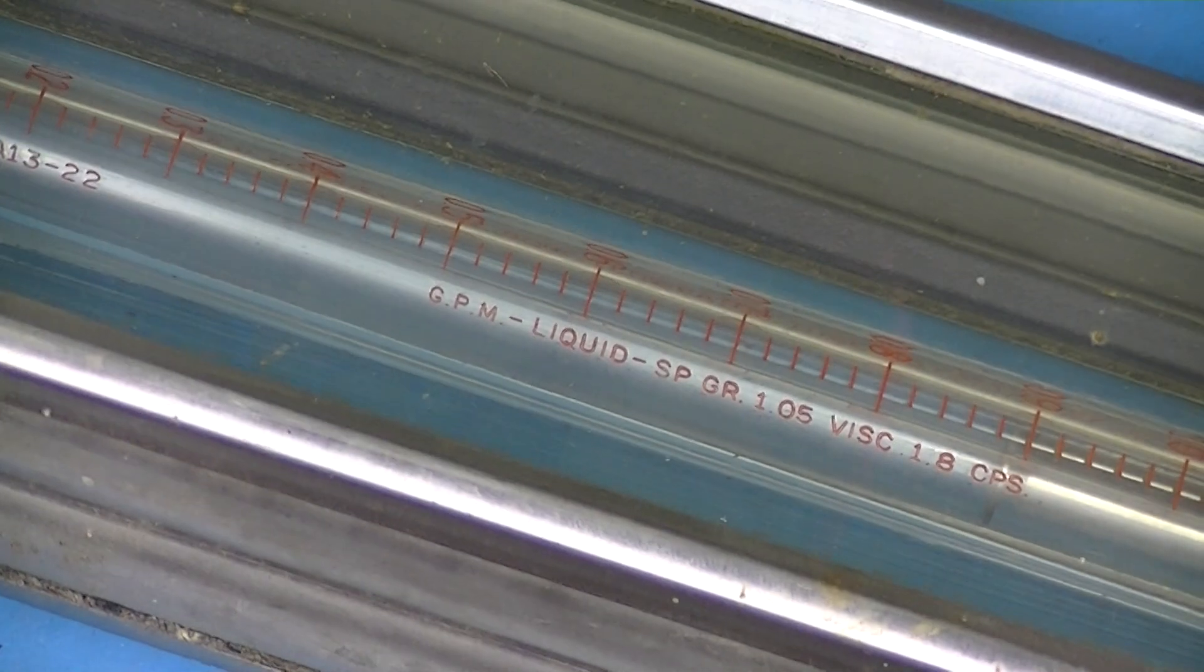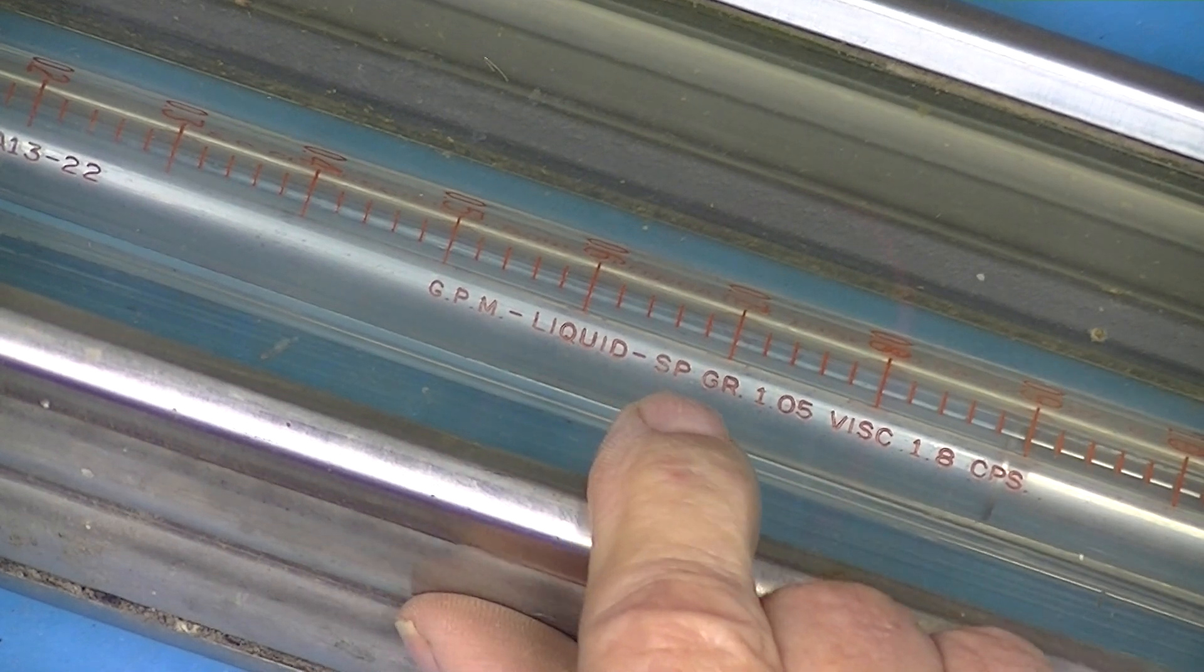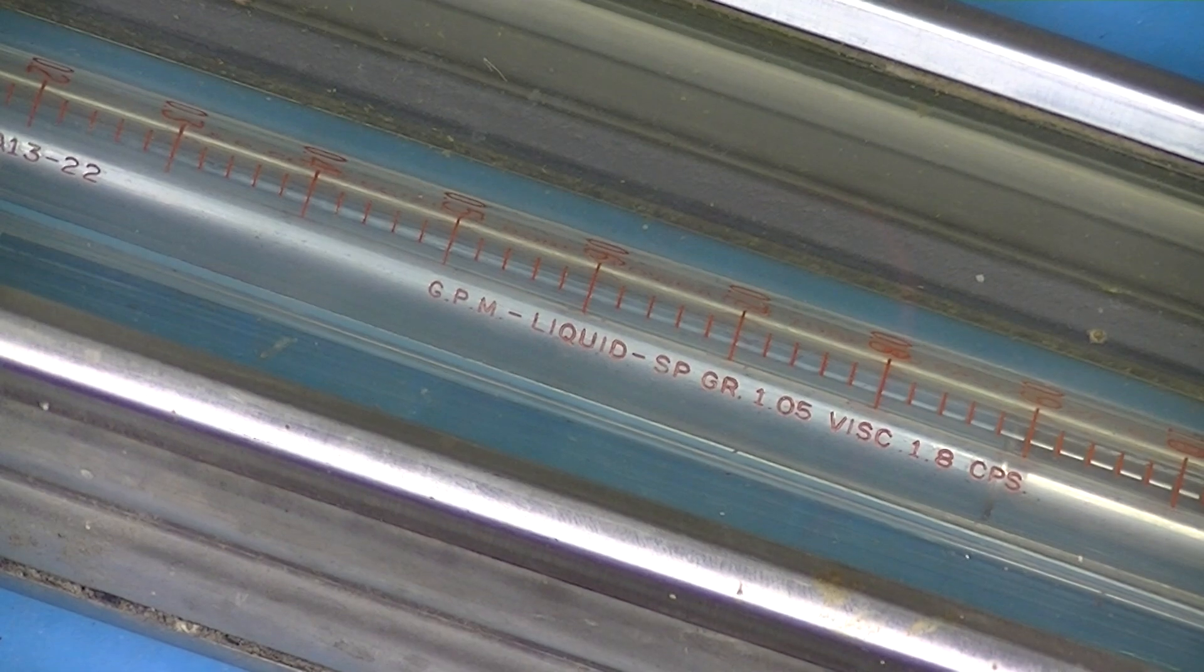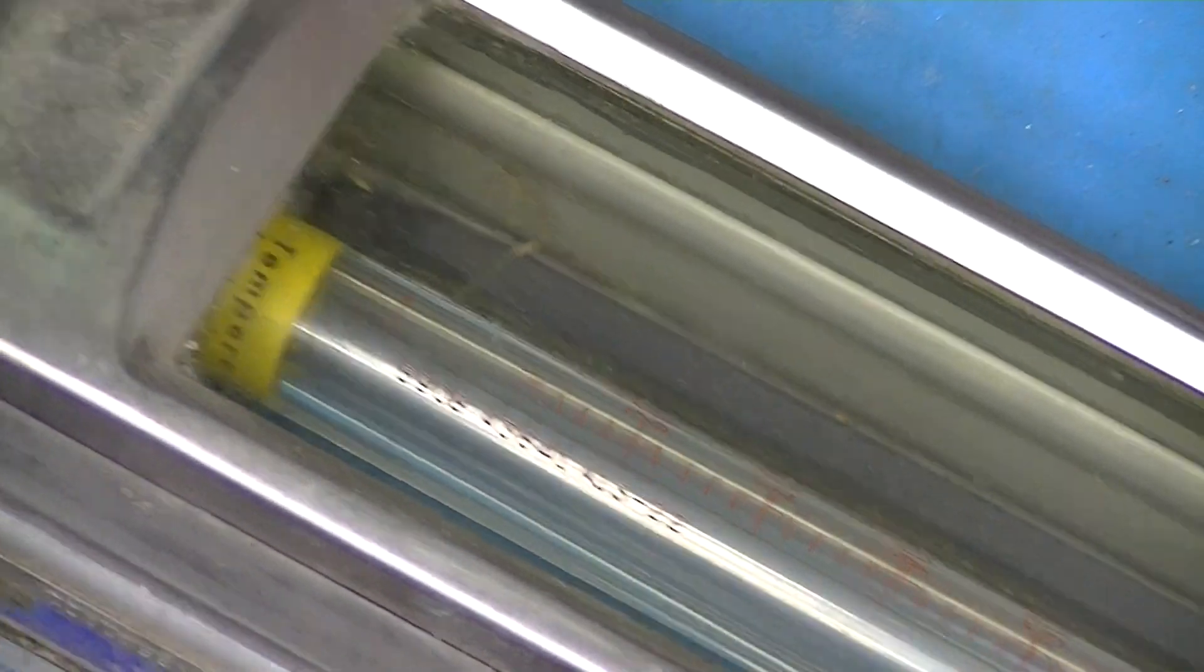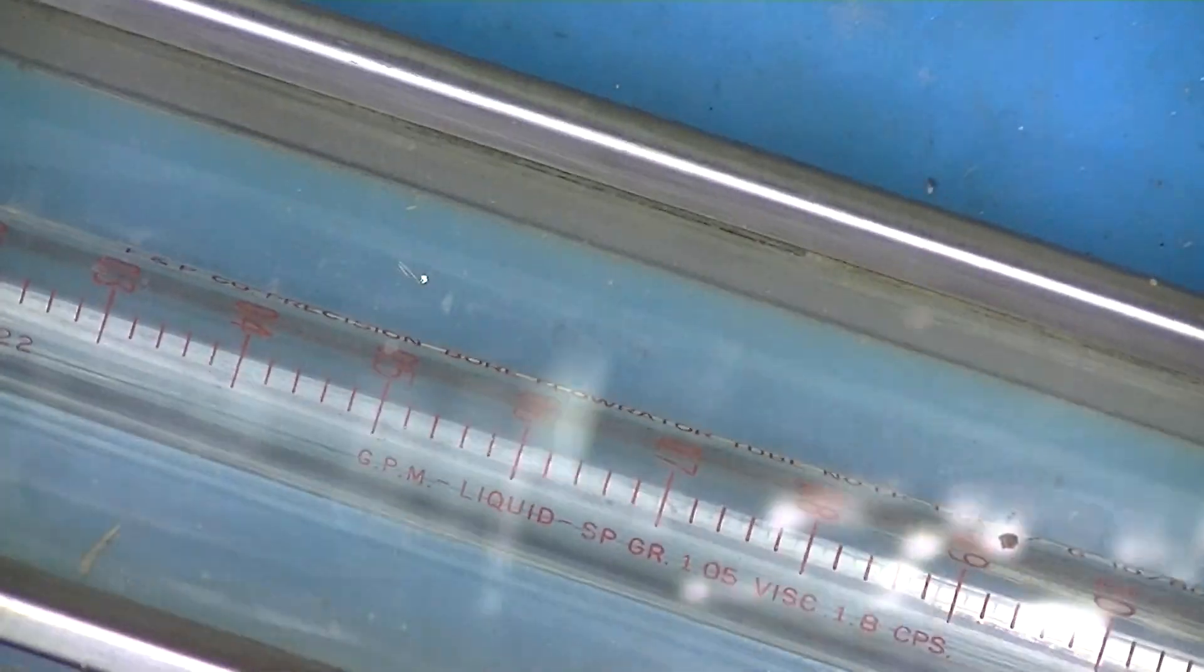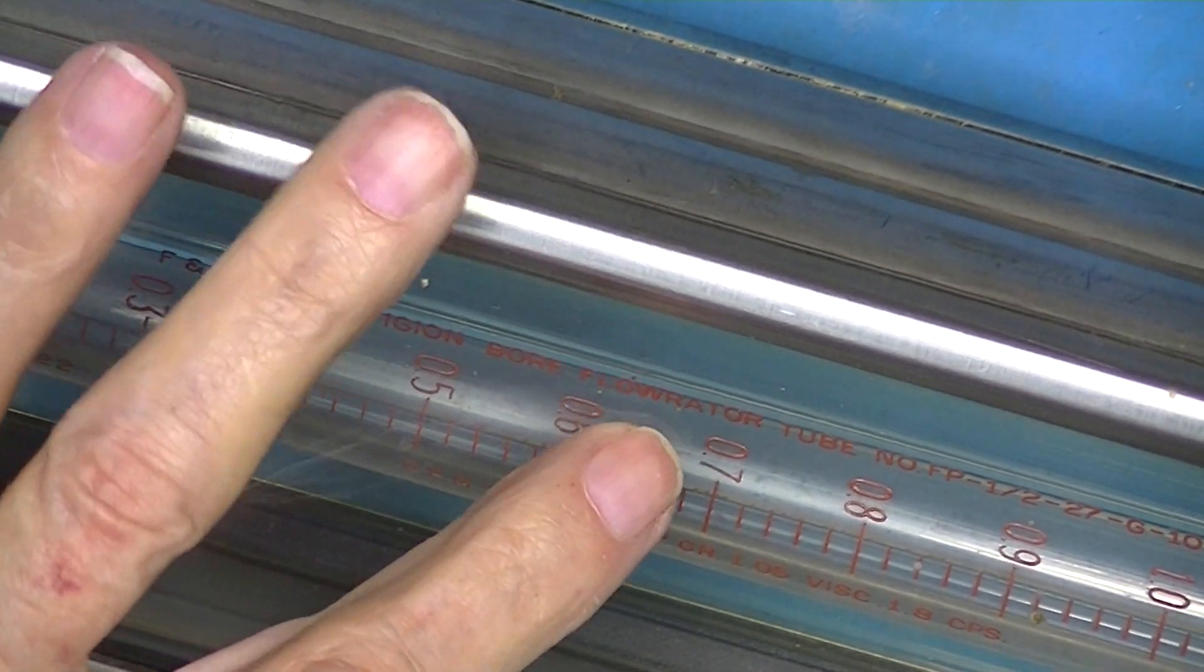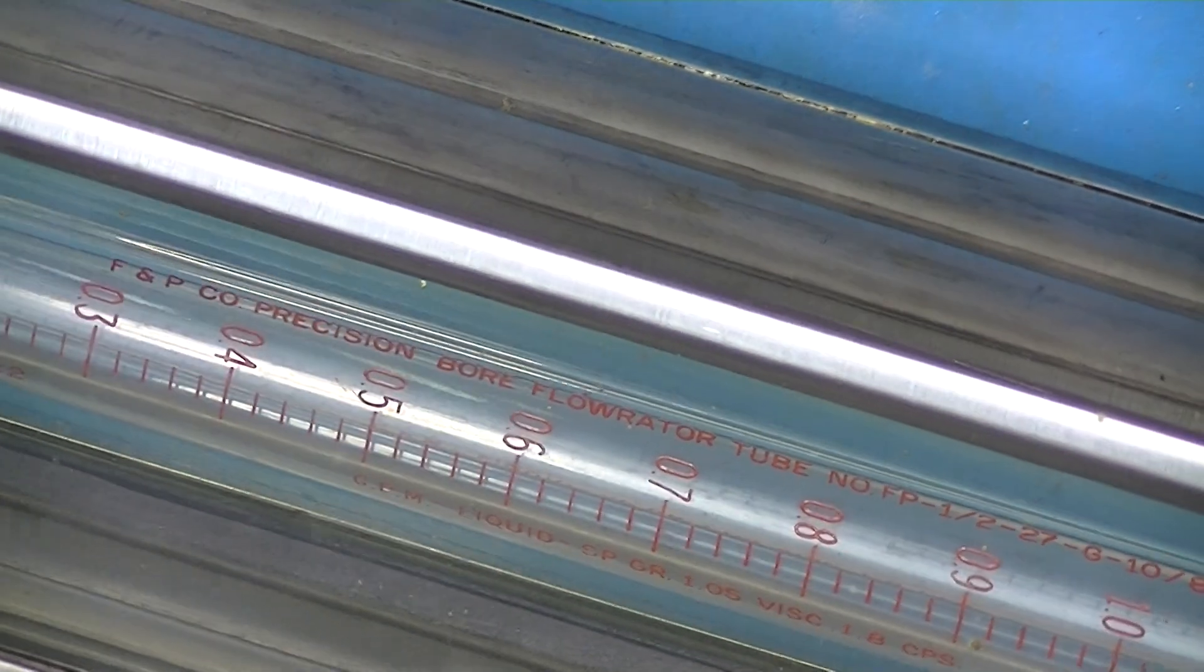It's calibrated in gallons per minute of a liquid with specific gravity of 1.05 and viscosity of 1.8 centipoise. So it's a very specific set of measuring conditions. Again, the tube is serialized. We have half inch end connections and it's marked Fisher and Porter Company Precision Bore Flow Rater. Flow Rater was a term specific to Fisher and Porter.